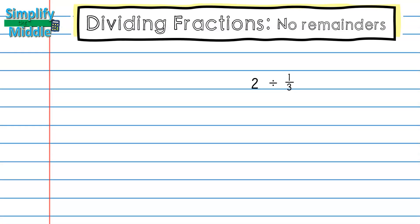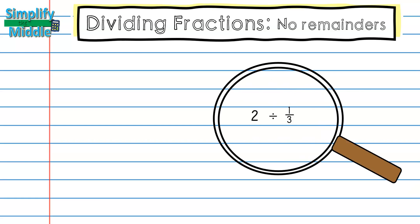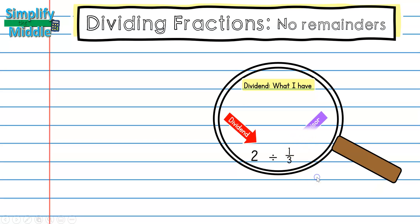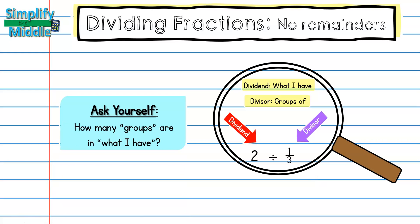Let's take a look at this problem: 2 divided by 1/3. In order to understand how to represent this with a model, we first need to understand what each part of this problem is representing. The first number in my division problem is my dividend — a dividend is what I have or what I start with. The second number is my divisor — a divisor is how many groups of something I have. When I am doing a division problem, I'm going to be asking myself how many groups are in what I have.